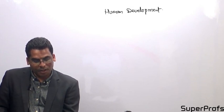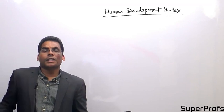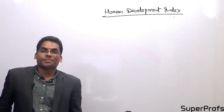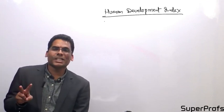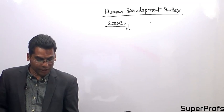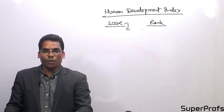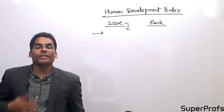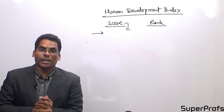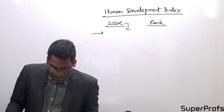The Human Development Index is the index that ranks countries in terms of their level of development. Under this index, UNDP gives a score to individual countries. There are two things: you get a score and then you get a ranking. We will find out where India stands, what is our position in BRICS, and also the themes of the Human Development Report.